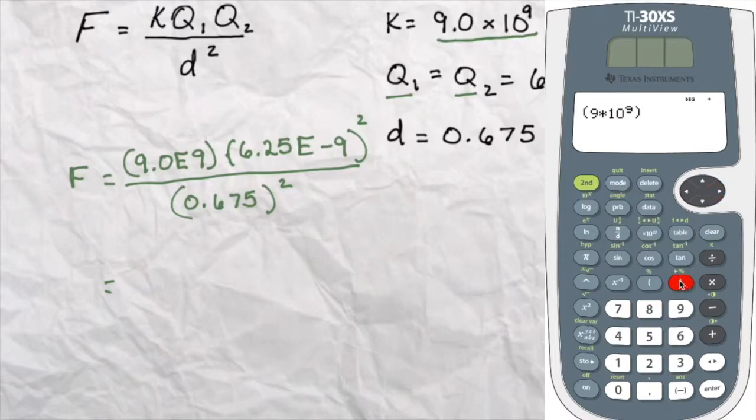So I have parentheses 6.25. My x10 to the nth button. My negative 9. I arrow out of this. I close off my parentheses. And now I'm going to square that quantity. And I'll hit enter.